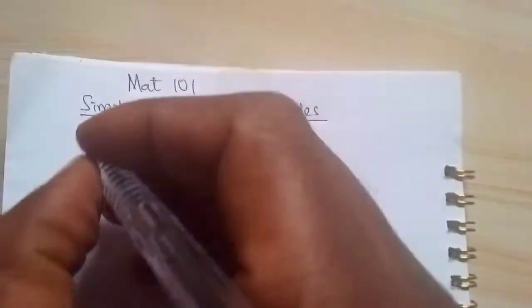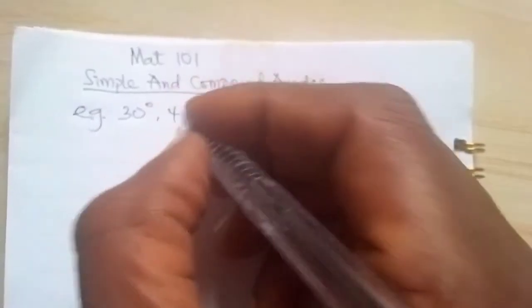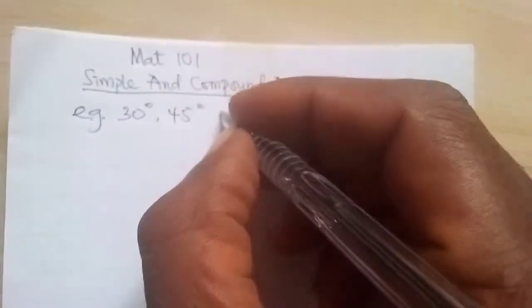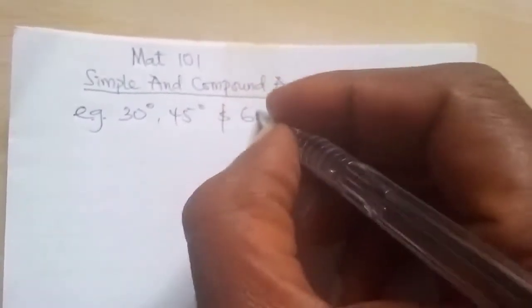An example of simple angles, they are 30 degrees, 45 degrees, and 60 degrees.